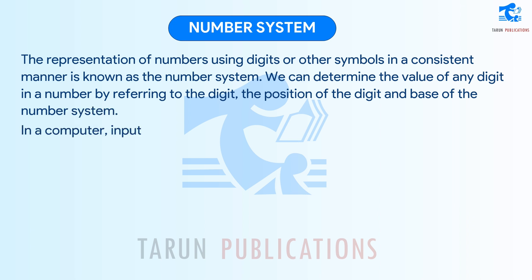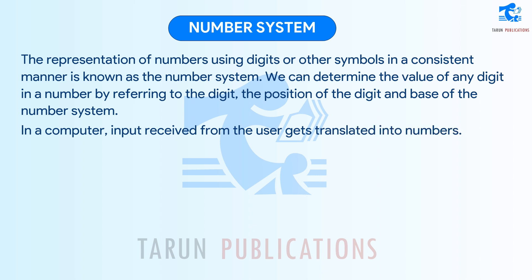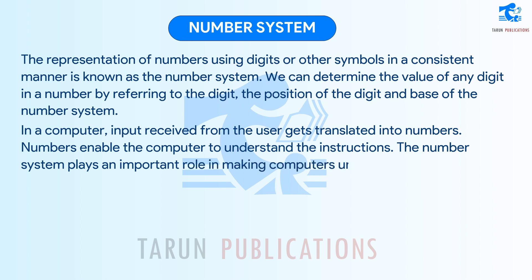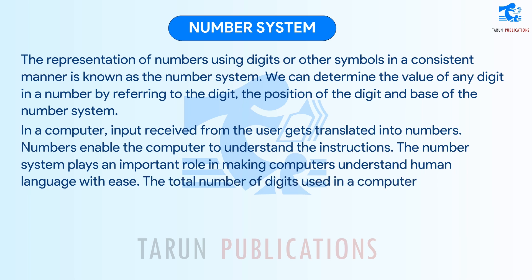In a computer, input received from the user gets translated into numbers. Numbers enable the computer to understand the instructions. The number system plays an important role in making computers understand human language with ease. The total number of digits used in a number system is called the base or radix of the number system.